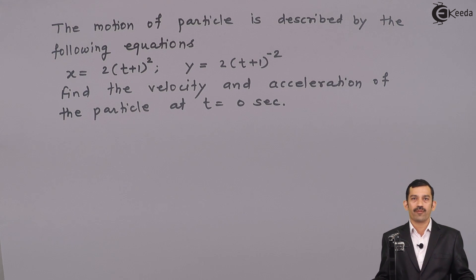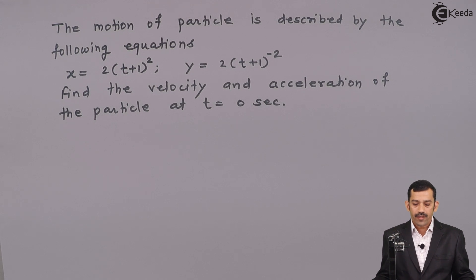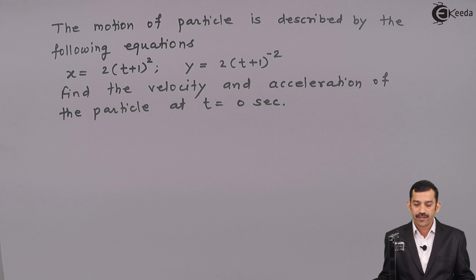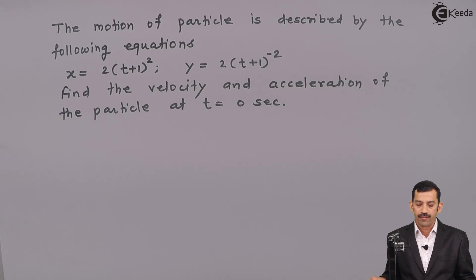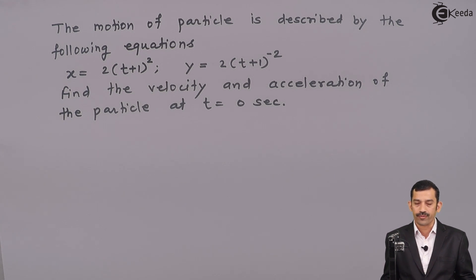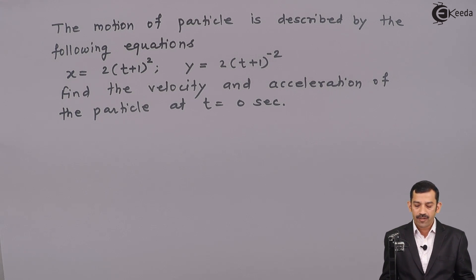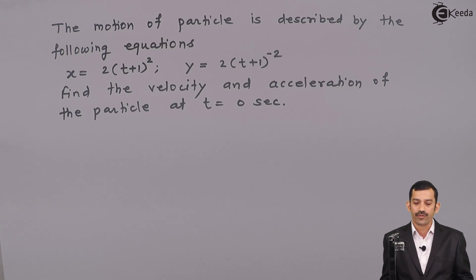Hi friends, we will solve a problem on curvilinear motion. The motion of a particle is described by the following equation: x is equal to (2t + 1) squared, and y is equal to (2t + 1) raised to minus 2. That means x and y are given as a function of time t. Find the velocity and acceleration of the particle at t equal to 0 second.